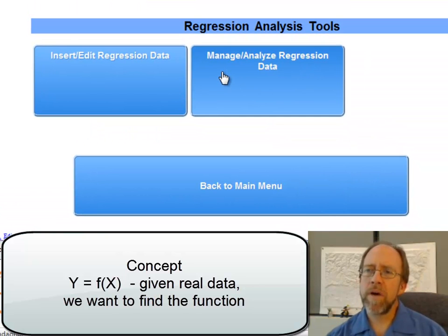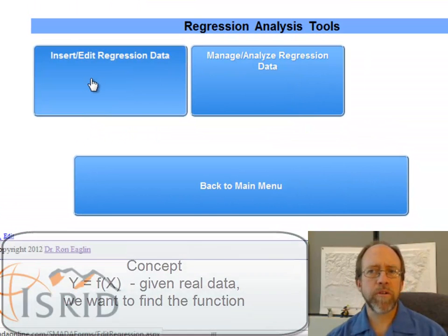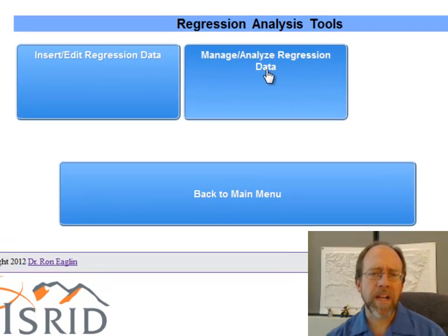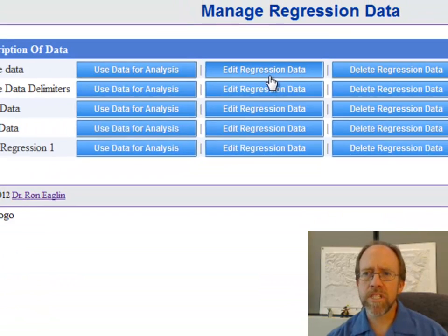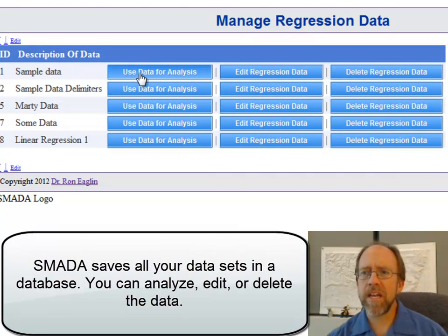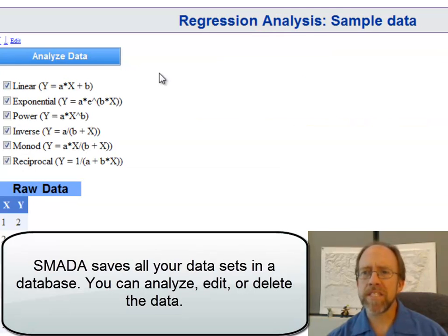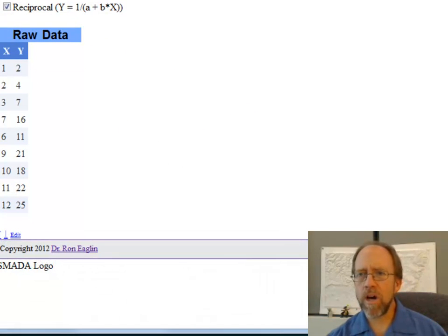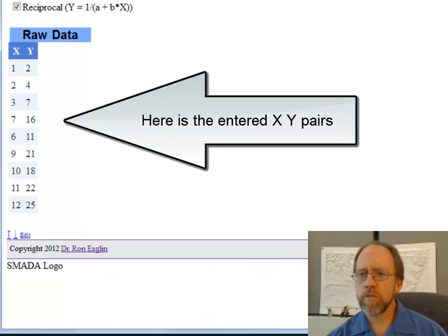If you're working within SMADA, you have two options with linear regression. One is just to put the data in, and the other one is to analyze the data. I've got some data already in here. We're going to go back and look at that data, but let's first look at using it for analysis. So I'm going to take the sample data set here, and I'm going to click on use data for analysis. Now, if we look right here, we've actually got this data, raw data. Let's move this over so you might be able to see it here.